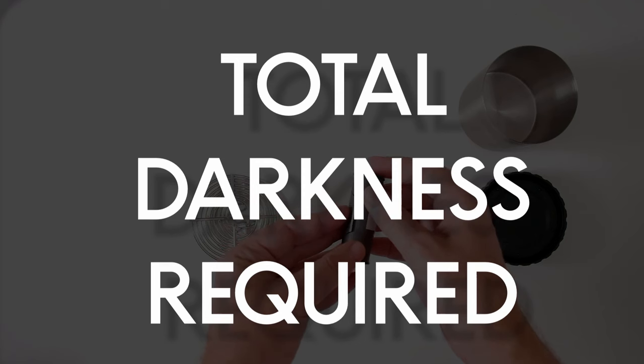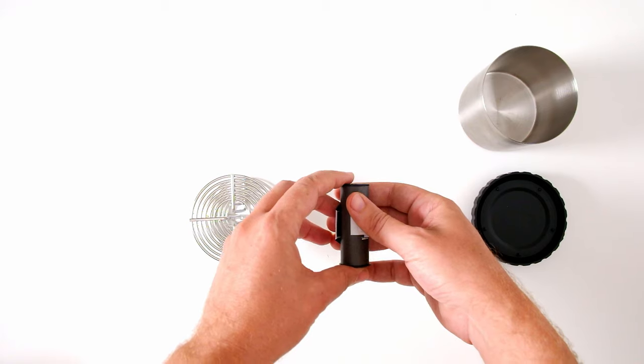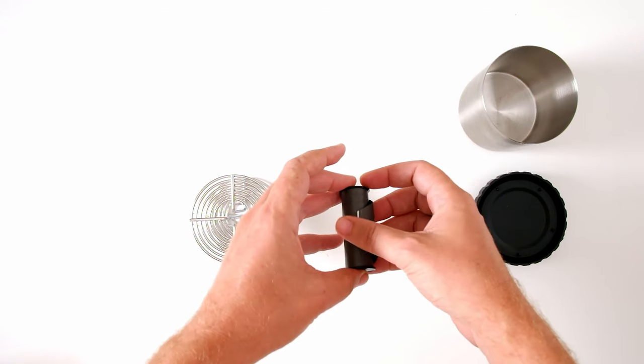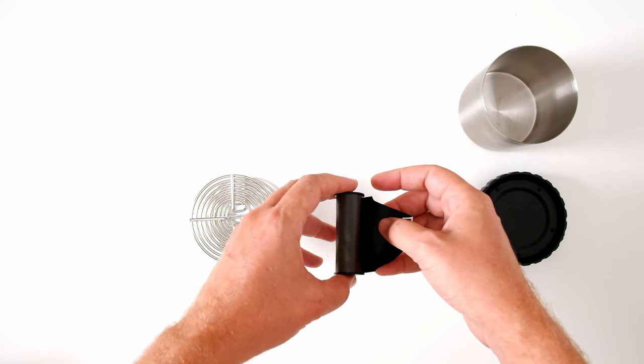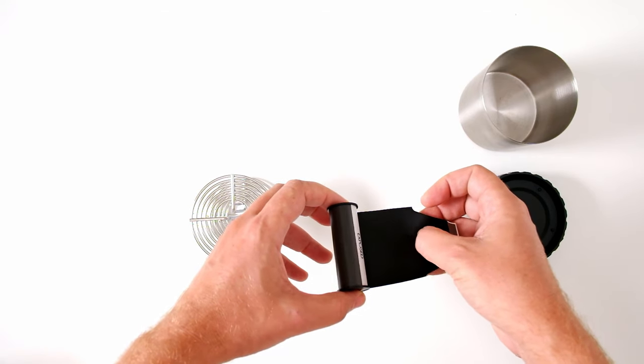And from here on out, everything must be done in total darkness. Turn off the lights. No light at all can leak in or you'll mess up your film. And now you can start unwinding the backing paper with your right hand.